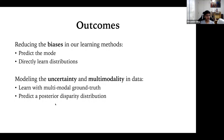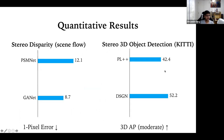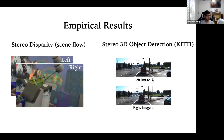We are essentially predicting a posterior disparity distribution using the ground truth. Our method can be viewed as Bayesian because it directly deals with distributions using the initial ground truth. Now let's look at the results. We show results on two main datasets: Scene Flow for stereo disparity estimation (synthetically generated images) and the KITTI dataset for autonomous driving (real-life driving images).